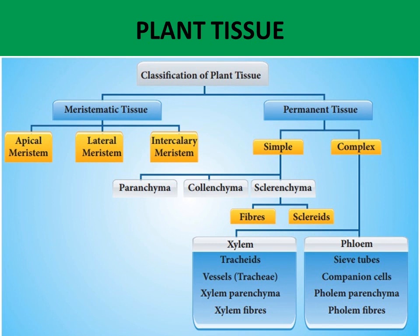Permanent tissue is divided into two parts: simple and complex. Simple tissue is further divided into three parts: parenchyma, colenchyma, and sclerenchyma. Sclerenchyma is divided into two parts: fibers and sclereids. Complex tissue is divided into two parts — xylem (tracheids, vessels, xylem parenchyma, xylem fibers) and phloem (sieve tubes, companion cells, phloem parenchyma, phloem fibers). This chart is really important.